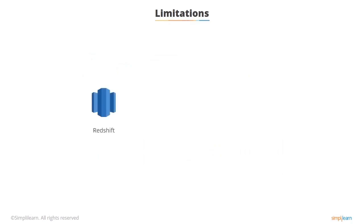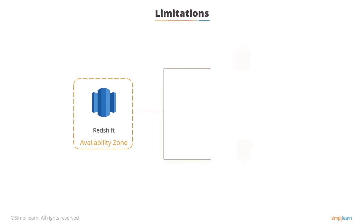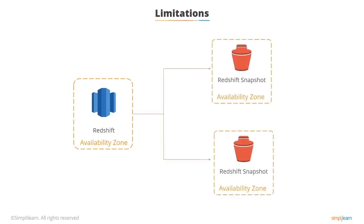One of the limitations of Redshift is that it's not highly available, as it's only available in one availability zone. The reason for this is that business intelligence is not viewed as business critical — it's something that would be brought up very quickly, but there would be other applications needed to be brought up first. You can, however, restore snapshots of your Redshift databases to other availability zones.